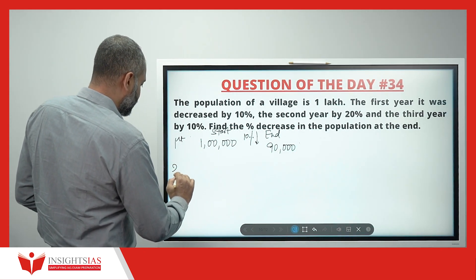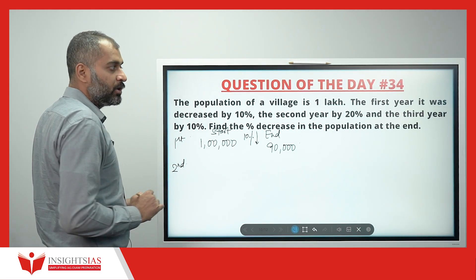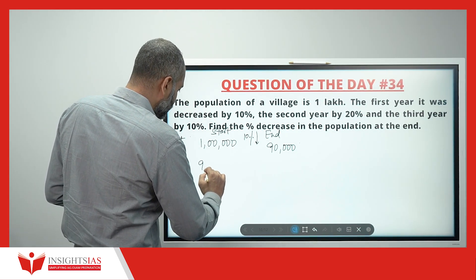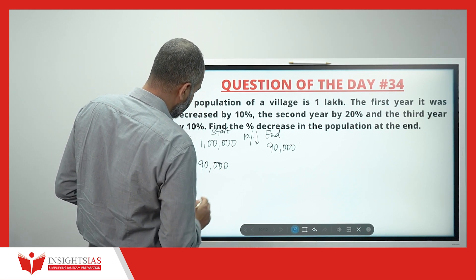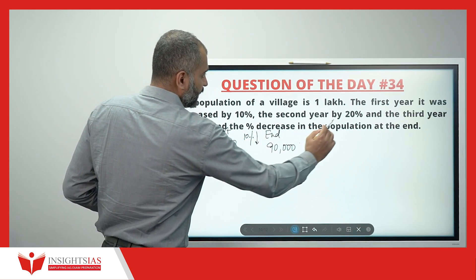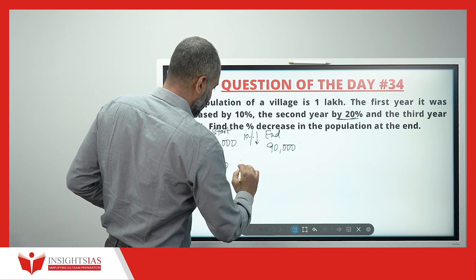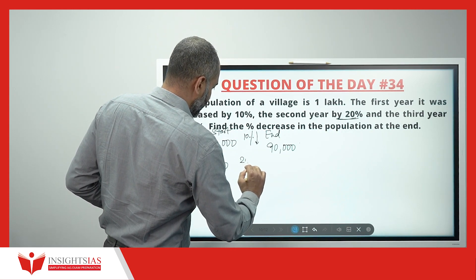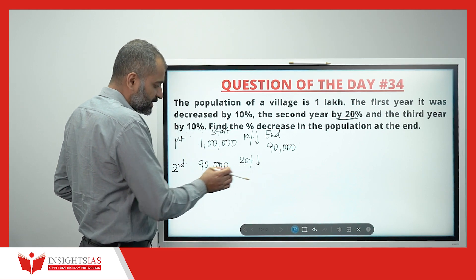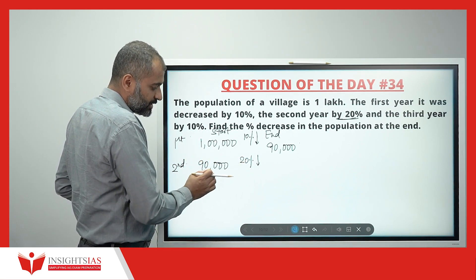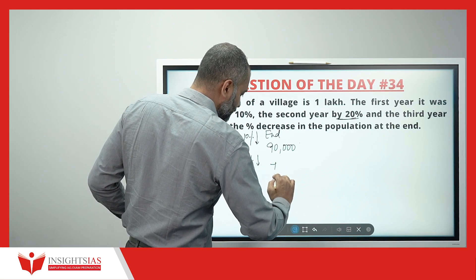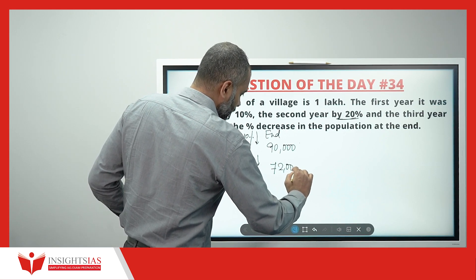So the starting of the second year, the population is 90,000. Now it has to be decreased by 20% in the second year. 10% of 90,000 is 9,000, so 20% is 18,000. If you decrease 18,000, that becomes 72,000.